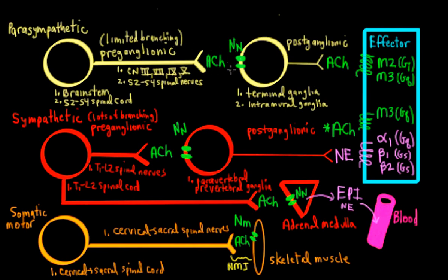The neurotransmitter released by the parasympathetic preganglionic neurons is acetylcholine, shown here in green. The excitatory ligand-gated ion channel receptor that it binds to is the nicotinic cholinergic receptor of the neural subtype, written as N subscript N. That's an excitatory receptor, and it's going to excite the postganglionic parasympathetic neuron cell bodies. Those are found in the peripheral nervous system in ganglia, and the two major types of ganglia are terminal ganglia, which are very close to the effector organ, or intramural ganglia, which are found within the walls of the organ.